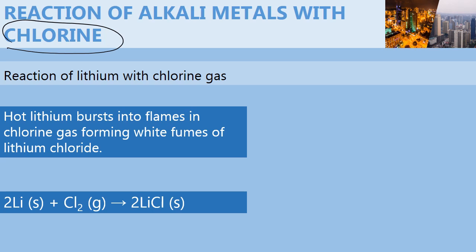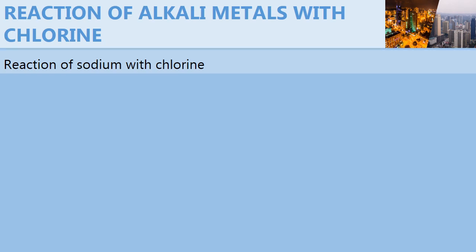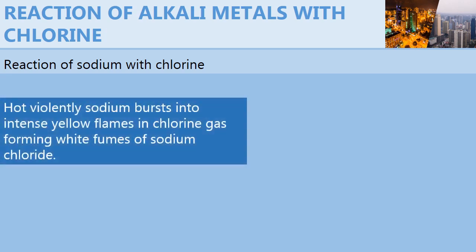Moving on to sodium — it reacts with chlorine violently. When a hot piece of sodium is lowered into a gas jar with chlorine gas, it violently bursts into flames, which are yellow in color, forming white fumes of sodium chloride.